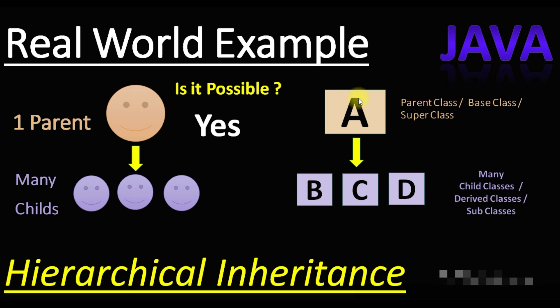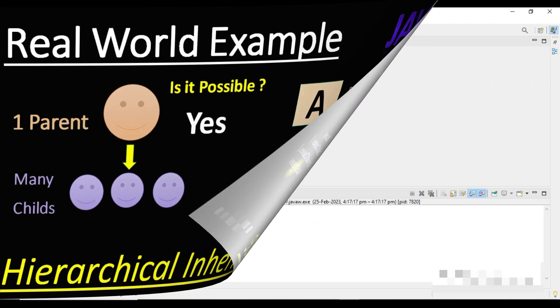So if A is my parent class, I can inherit A's class properties from B, C, or D class, where all these B, C, D are nothing but my child classes. Let's take this example in Eclipse.